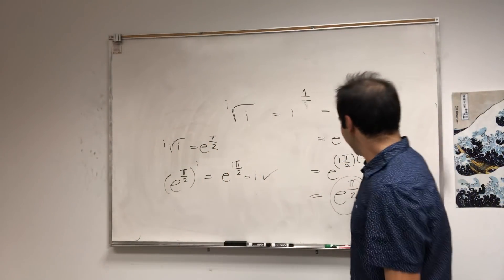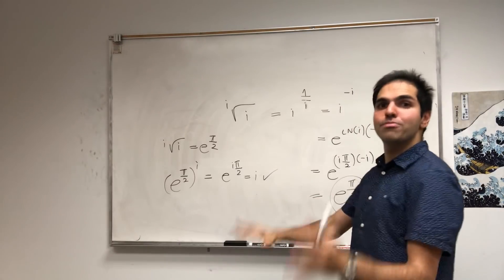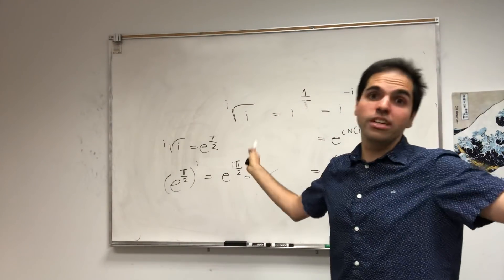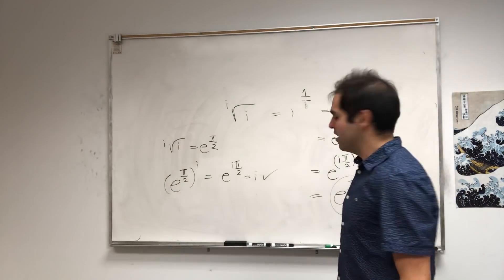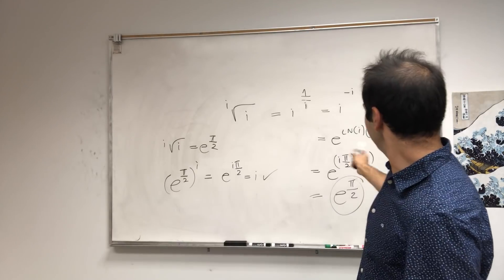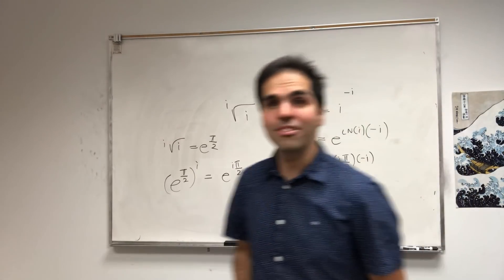But again, be careful, this is like the principal imaginary root. Here you could have many real roots, actually, right? Depending on, you can always add like a 2 pi i, 2 pi n to this.